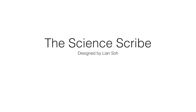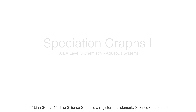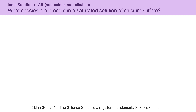You're listening to Lenso from the Sciencescribe, and in this video we're going to look at speciation graphs for the different types of solutions found in NCEA Level 3 Chemistry's aqueous system. The first example I'm going to look at is an ionic solution of calcium sulphate. It's non-acidic and it's also non-alkaline.